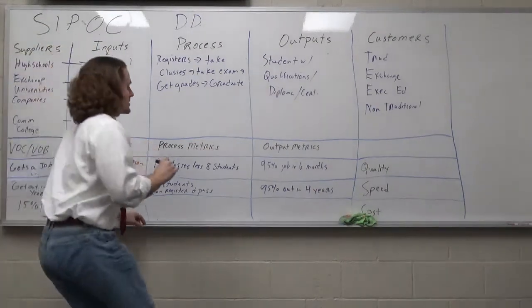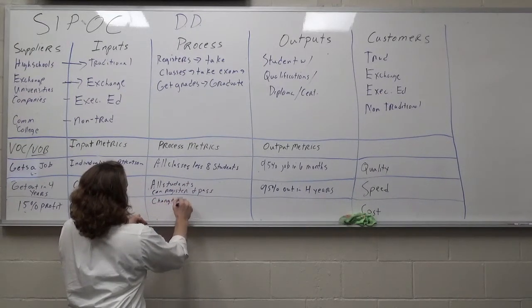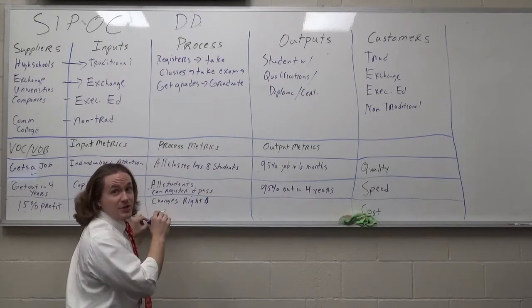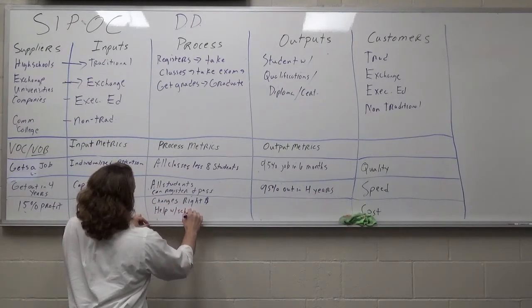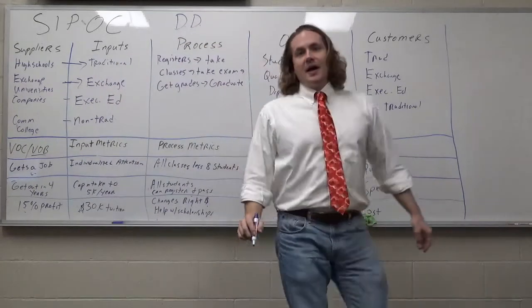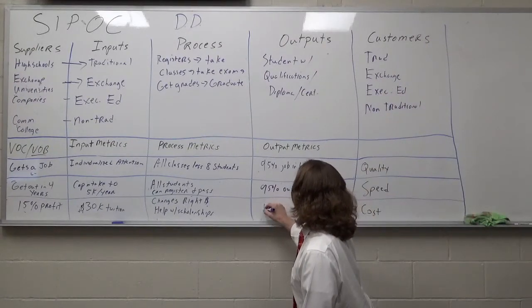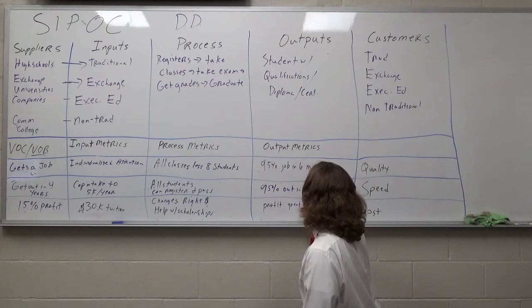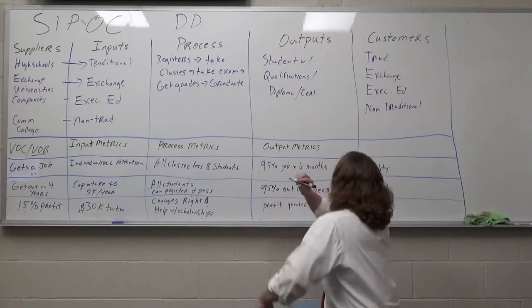Process metrics could be things like charging the students the correct amount of money. And also helping with scholarships in case some students can't pay. Output metric, profit is greater than 15%. Greater or equal to. And that's your cost.